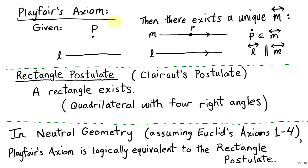For instance, we have earlier seen that Playfair's axiom is equivalent to Euclid's fifth axiom. Here, we're going to introduce another postulate which is also similarly equivalent to Playfair's axiom, and hence to Euclid's fifth axiom. This postulate is deceptively simple and straightforward. Called the rectangle postulate, or Clairaut's postulate: a rectangle exists.